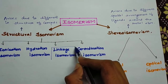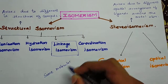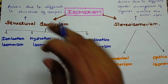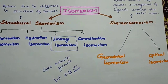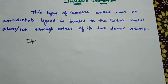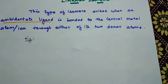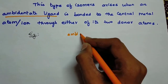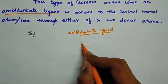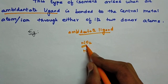In this video we will discuss linkage isomerism in detail. Structural isomers have the same molecular formula but different structures. Linkage isomerism arises when an ambidentate ligand is bonded to the central metal atom or ion through either of its two donor atoms.